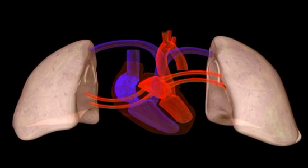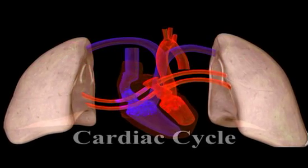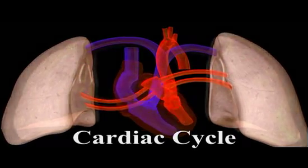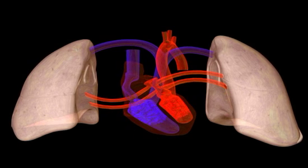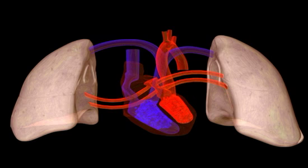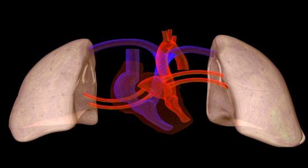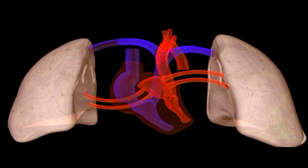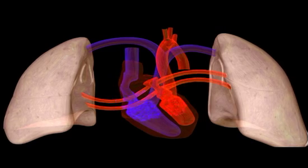The alternating contraction and relaxation of the heart chambers is the cardiac cycle. In the cardiac cycle, the two atria contract in synchrony, emptying their contents into their adjoining ventricles. A fraction of a second later, the two ventricles contract simultaneously, forcing blood into arteries leaving the heart. All the chambers then relax briefly before repeating the cycle.